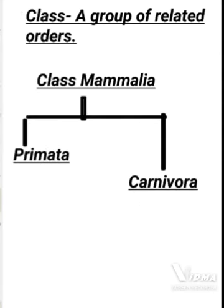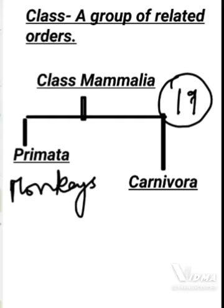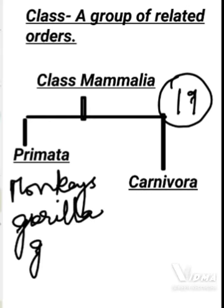The next taxon is class. Class is a taxon which has a group of related orders. Class Mammalia in the animal kingdom has actually 19 orders. We can mention two: Order Primates and Order Carnivora, both included in Class Mammalia. Order Primates includes monkeys, gorillas, and gibbons. Order Carnivora includes meat eaters like tigers, cats, and dogs. All of these are included in Class Mammalia.